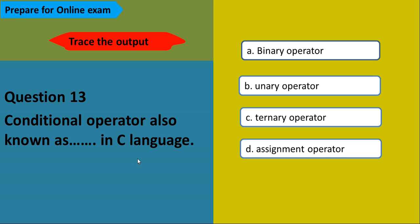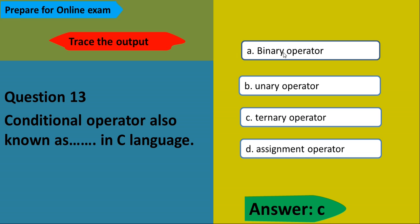The conditional operator is also known as the ternary operator in C. A unary operator requires one operand, a binary operator requires two operands, and in the ternary operator, we check a condition requiring three operands.